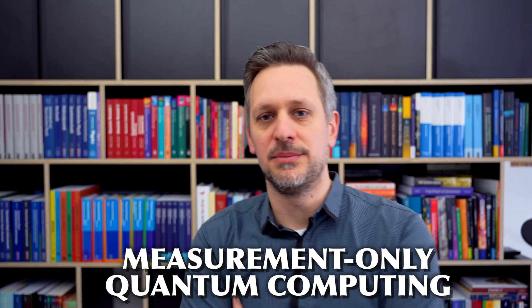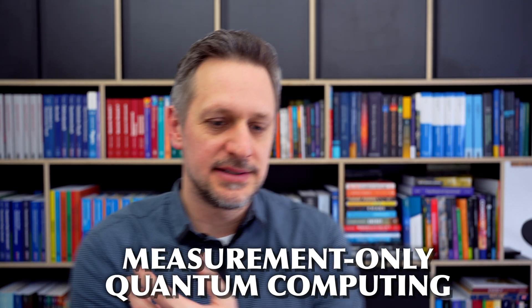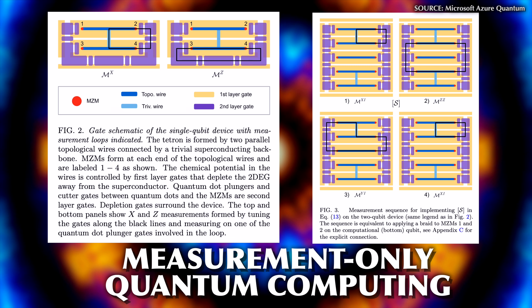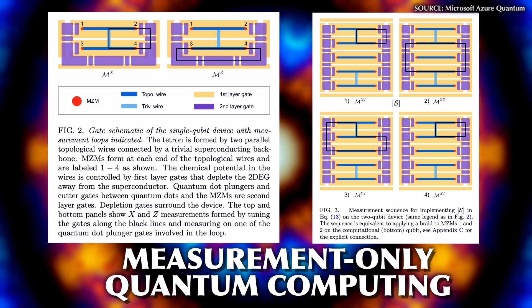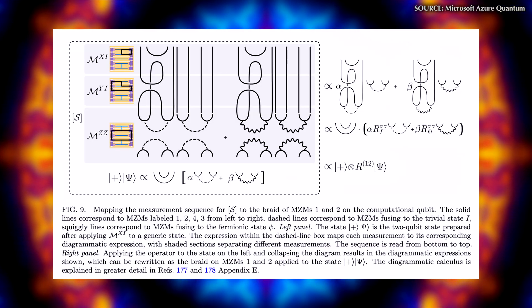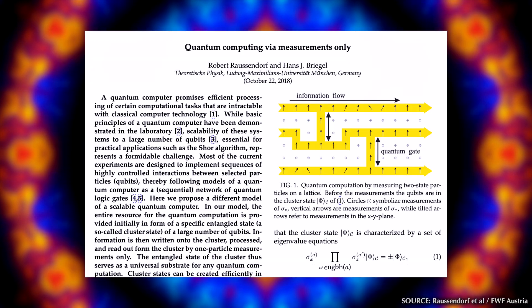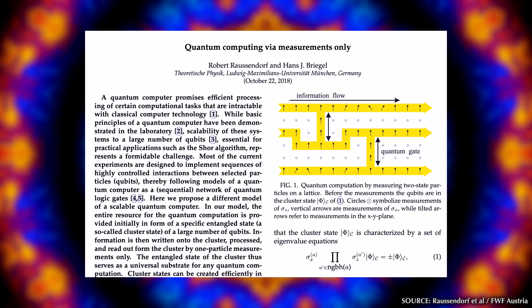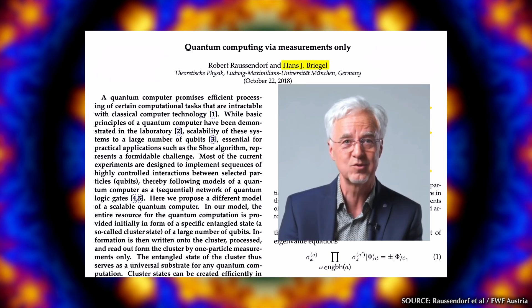All operations on the qubits are done by braiding the Majorana modes, but this isn't done by physically moving them around. Microsoft makes use of measurement-only quantum computing, which means that instead of performing operations on the qubits, you do specific projective measurements and create the same results. So you can perform a set of measurements to create the same state you would get if you had physically moved around the particles to braid them. This is a pretty cool concept and, as it happens, it was pioneered by my thesis advisor.